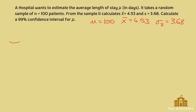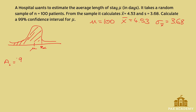Again, here we're dealing with a normal distribution with mu in the middle. We want to find the z-value to the right, so we need to find the area to the left. Using the formula: 0.99 plus 1, divided by 2, which equals 0.995.